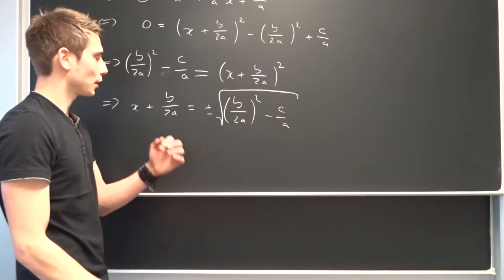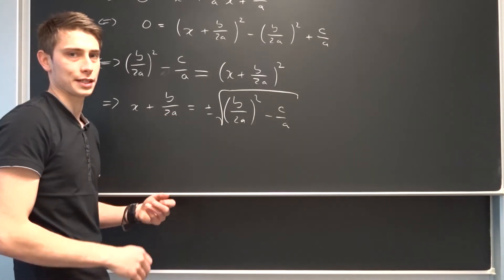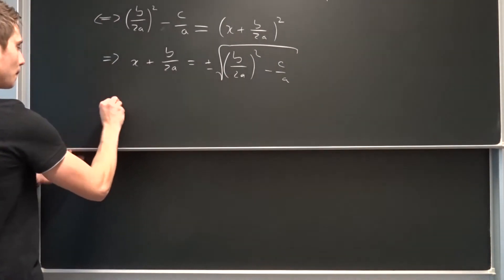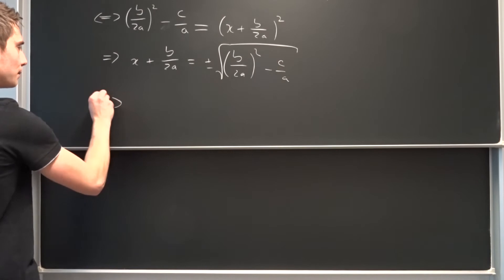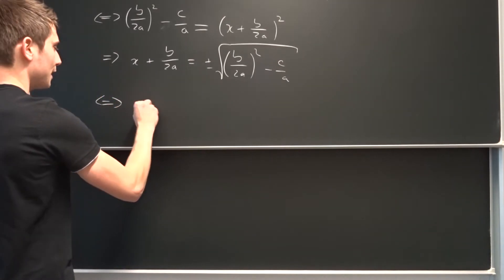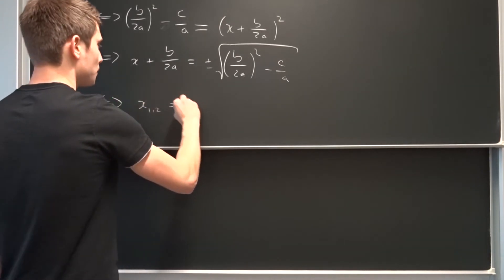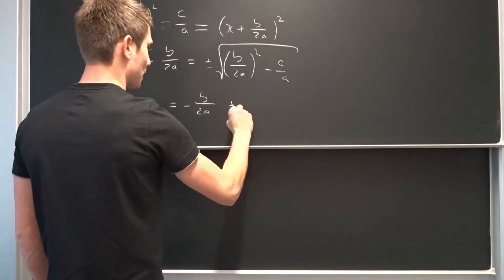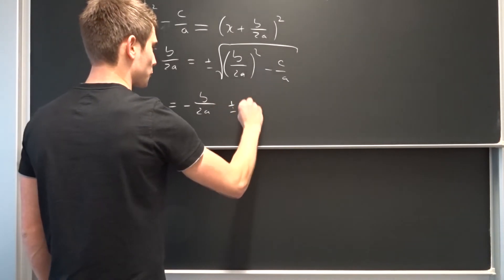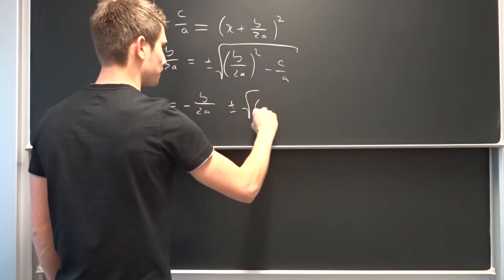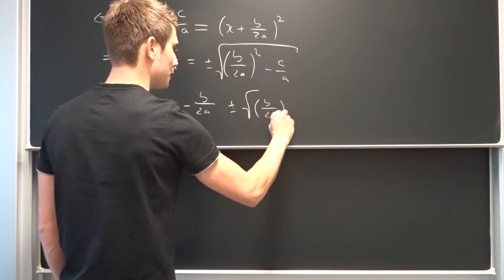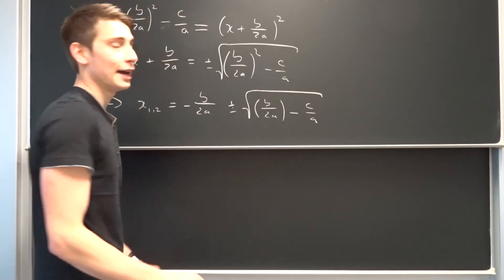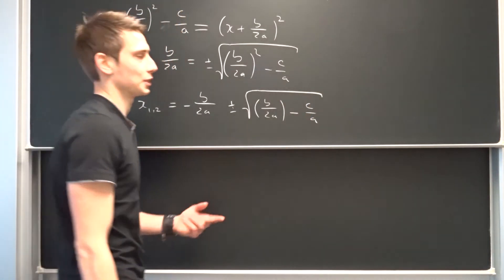Now we only have to subtract this term and then we've got our two solutions for x. So in the end, x₁ and x₂ equals minus b over 2a, plus or minus the square root of b squared over 4a squared minus c over a. And we are basically done.